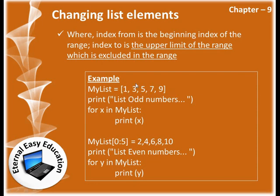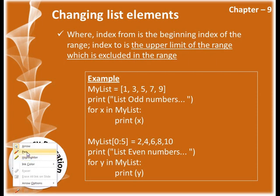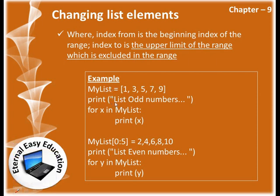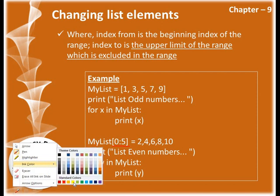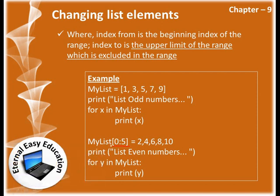If we want to change the whole list, the upper value in the range must be one value incremented - that means excluded from the range. Since there are five elements, the range is written as 0:5, because the upper limit 5 is excluded, so it will take indices up to 4. So it is taken as my_list[0:5].